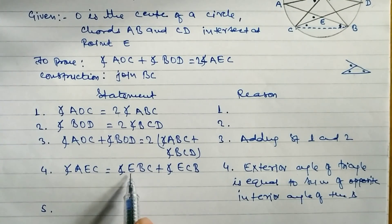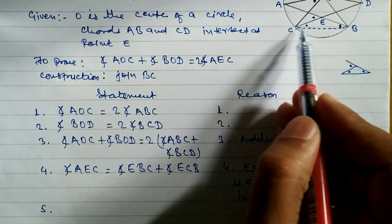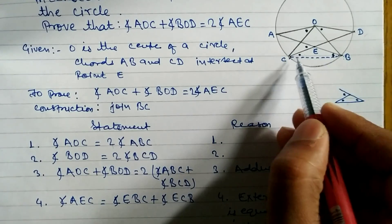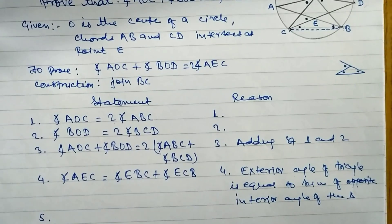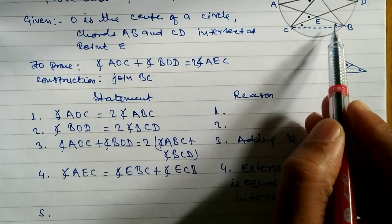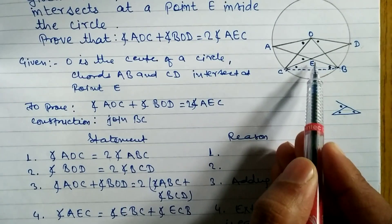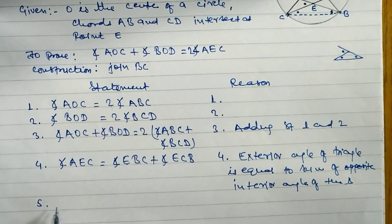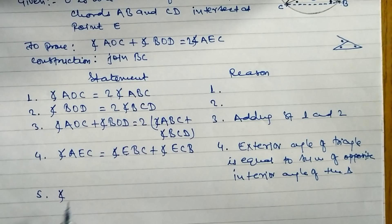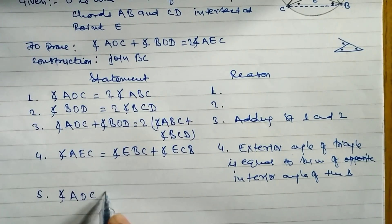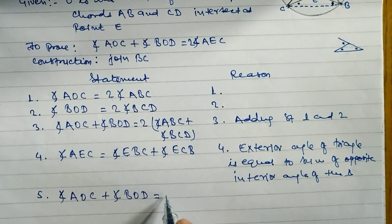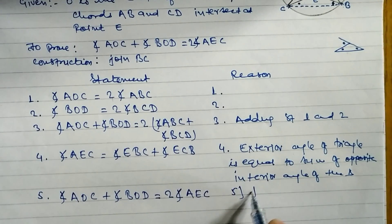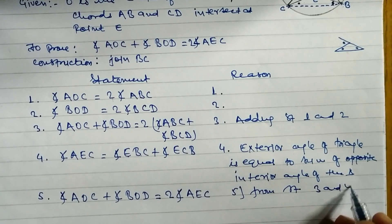In statement five, notice that angle ECB and angle BCD are the same angle, and angle ABC and angle EBC are the same angle. So from statements three and four, substituting these equal angles, we get: angle AOC plus angle BOD equals two times angle AEC.